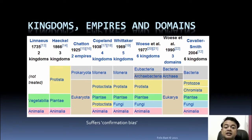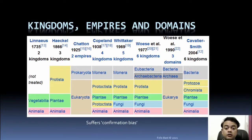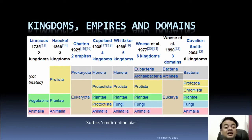Woese et al. in 1977 erected Archaebacteria as a separate kingdom. Woese is a very famous archaebacteriologist from the US who recently passed away. He erected Archaebacteria as a kingdom in 1977, subsequently revised in 1990 into three domains.